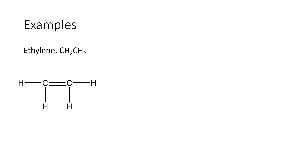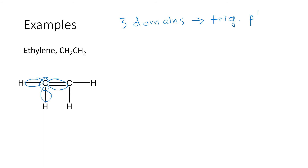When we start looking at more complicated molecules, we often have to treat more than one atom as being the center of the structure. In something like ethylene, if you look at the left-hand carbon atom, it has three domains — two of them are single bonds to hydrogen, and one of them is a double bond to the other carbon. With three domains, the electron geometry is going to be trigonal planar. And if you look at the other carbon, you'll find the same thing — the carbon has three domains, making it trigonal planar as well. So both of these carbons are trigonal planar.